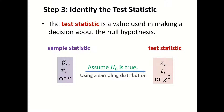For example, if you're dealing with the proportion p-hat, which is the sample proportion, the corresponding test statistic will be z. If your sample statistic is the sample mean, which is x-bar, then you will have to turn it into t as its test statistic. If you're dealing with the sample standard deviation s, then you will have to turn it into the test statistic chi-square.